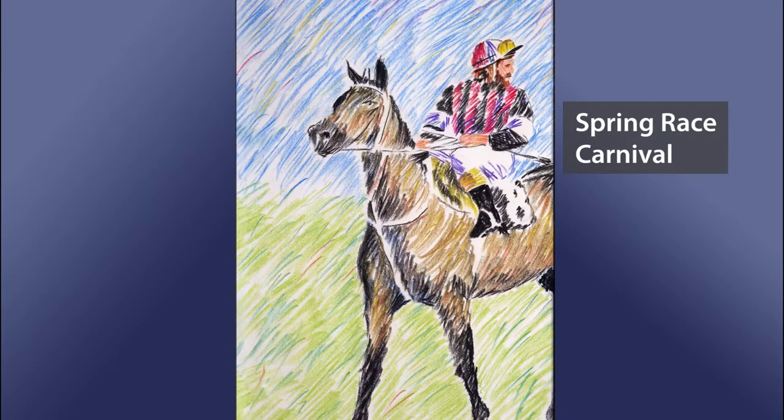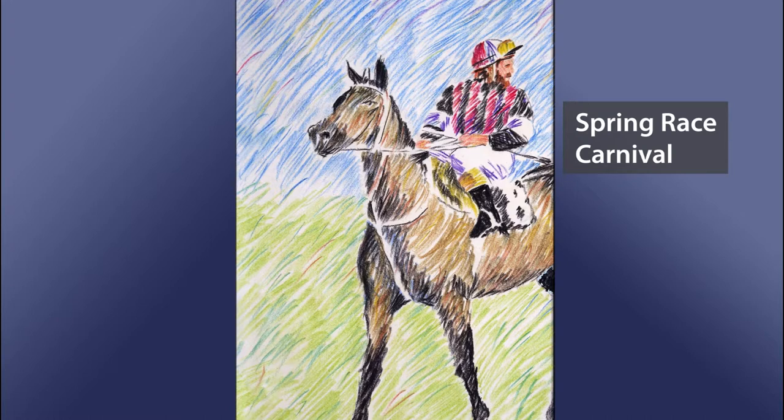Really bold hatching also works. This was an illustration for a field day at a race course. You can even do portraits with scribbly shading. This is Australian author Sesmo.